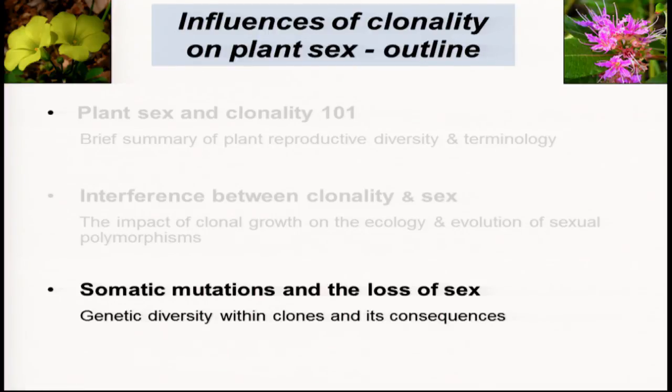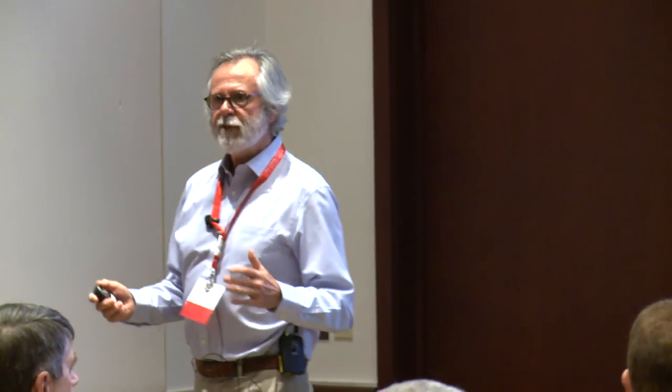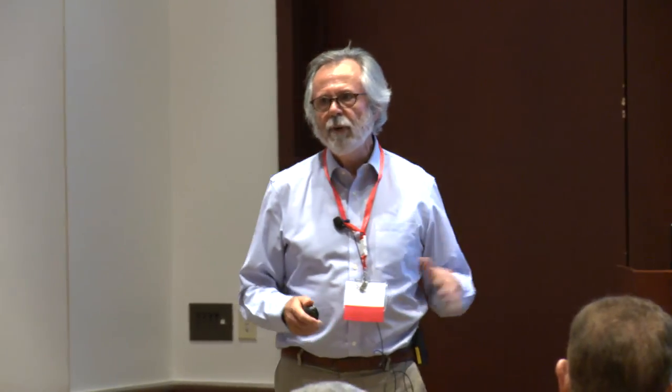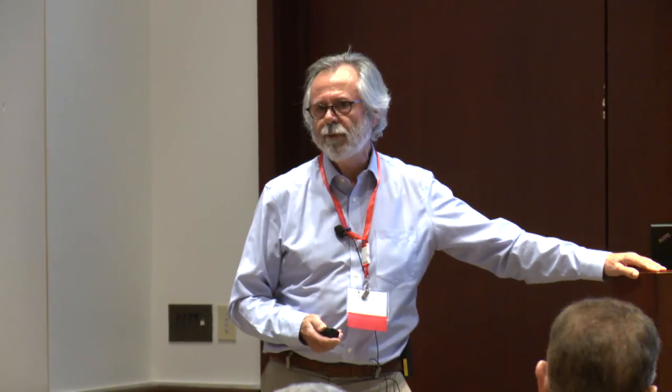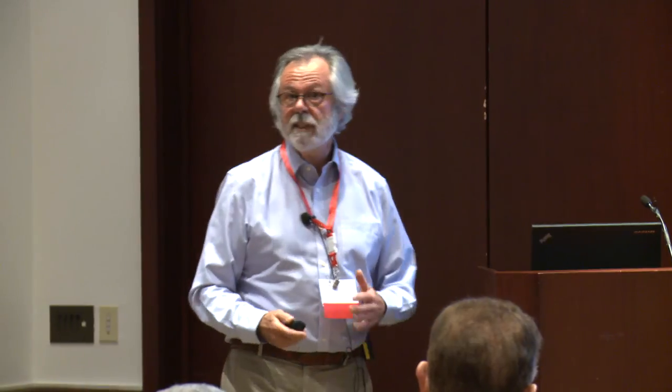I'd like to move on to the last part, where we move into more speculation than hard data, simply because this has not been a particularly attractive area to work in — partly because of the difficulty of measuring somatic mutations, and the fact that markers weren't available until relatively recently. I'd like to go through three recently published pieces of work which suggest there may be processes operating in clonal populations that could lead to sexual dysfunction and the loss of sex, particularly at range limits.